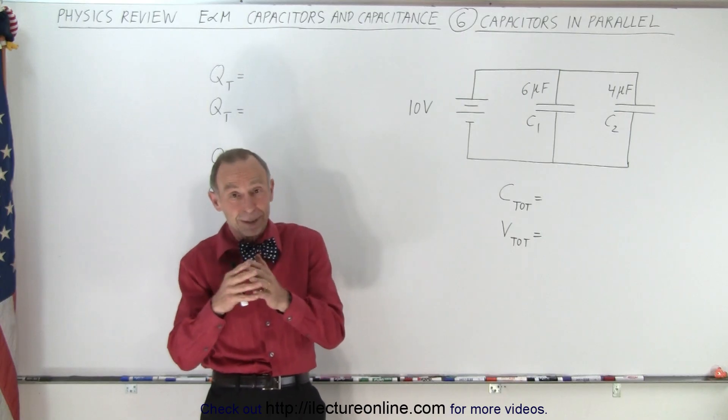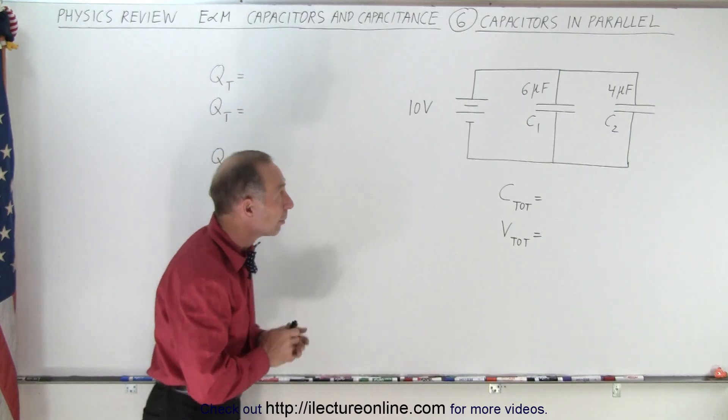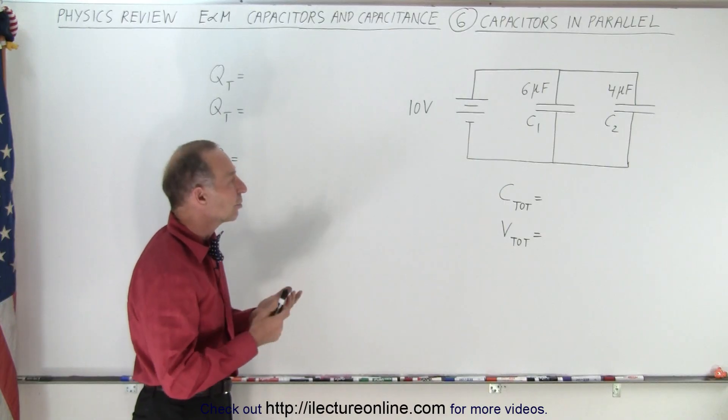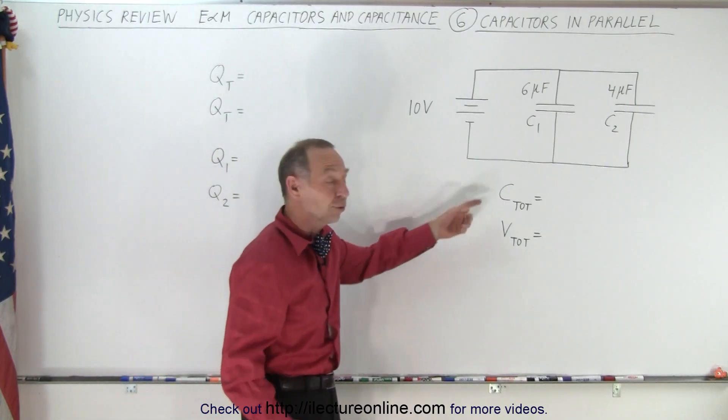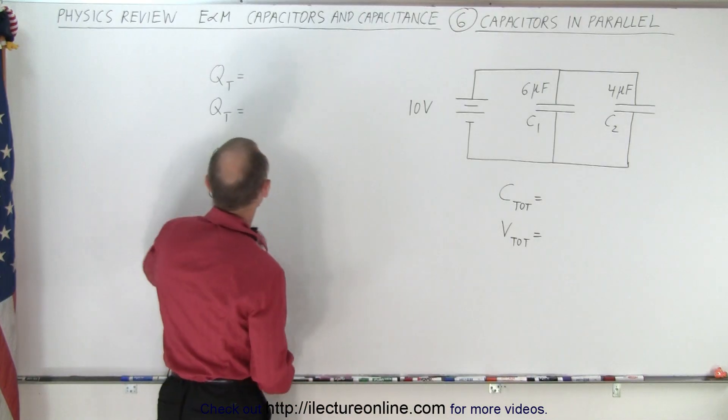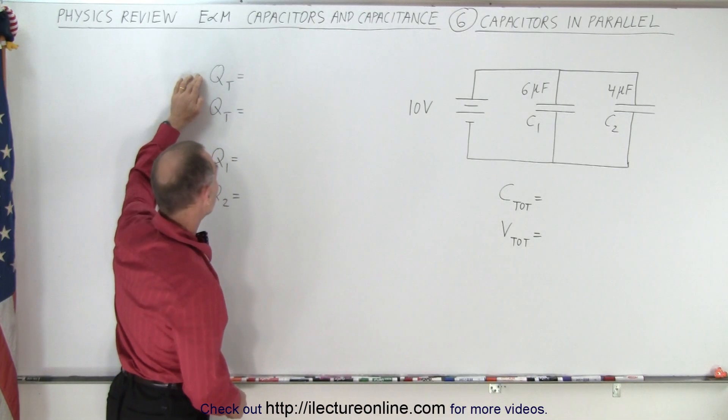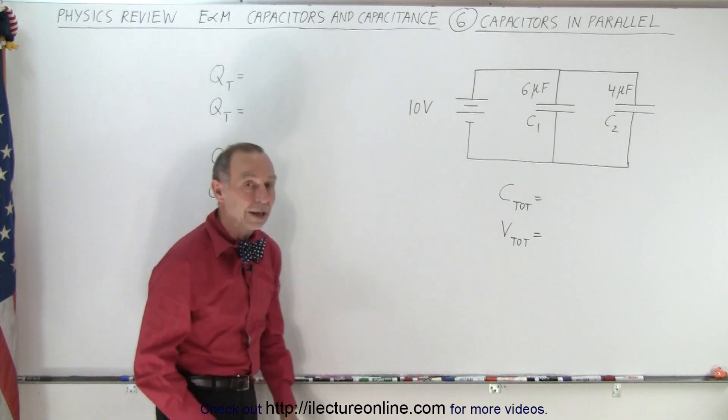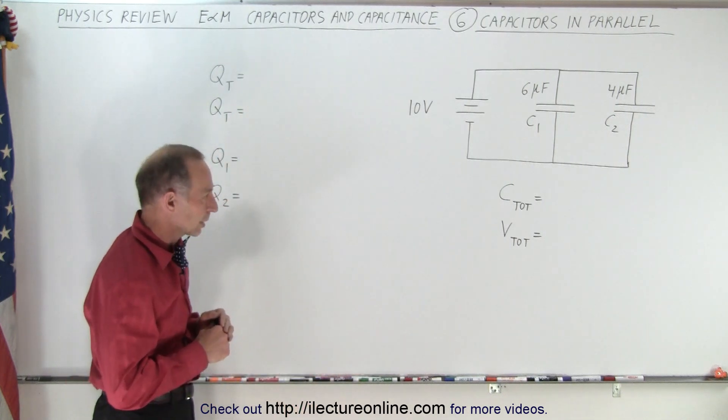So let's first, and of course there can be combinations of the two, but first let's place the capacitors in parallel. And by doing so we're going to find the total capacitance or the equivalent capacitance, the total voltage, the total charge, and the charge on the first capacitor and the charge on the second capacitor. So let's go ahead and work that out.